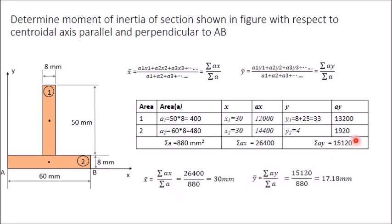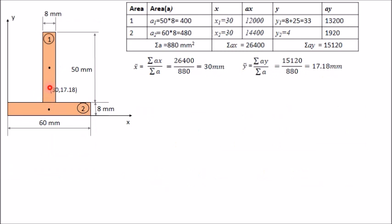Calculate ȳ = ΣAy / ΣA = 15120 / 880 = 17.18 mm. The centroid is now located: 30 mm from the y-axis and 17.18 mm from the x-axis, as marked in the figure.